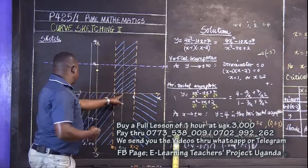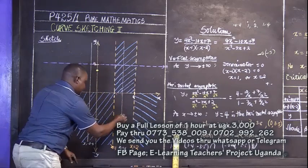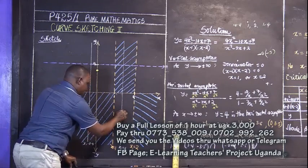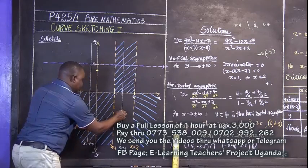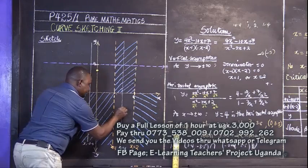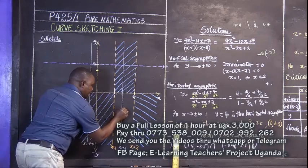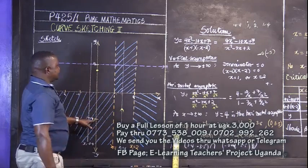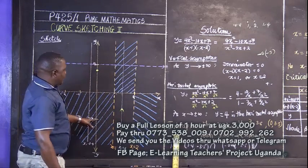Then the other is negative 3.5. Negative 3.5 is down, so we have it around here. Are we getting it? Because it's negative 4, around here. And at that point was a maxima. Have you seen?